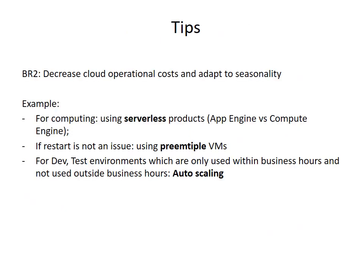For requirement two — to decrease cloud operational costs — here are some examples that may appear in your exam. For computing, you can select serverless products, for example App Engine over Compute Engine. When restart is not an issue, you can use preemptible products. For dev and test environments used only within business hours, you can use auto scaling.